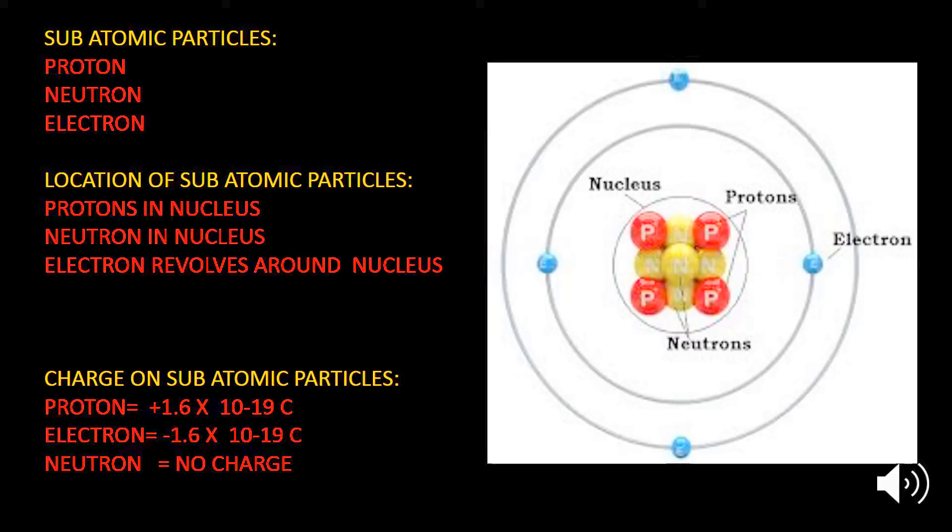Location of the subatomic particles: The proton and the neutron are present inside the nucleus of an atom, whereas the electrons revolve around the nucleus of an atom.